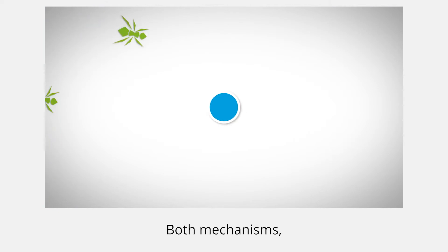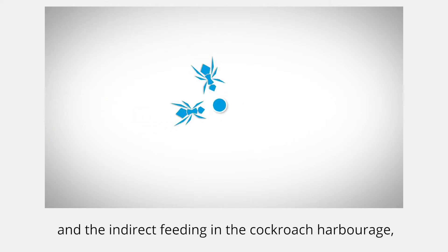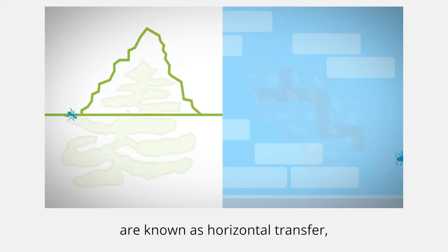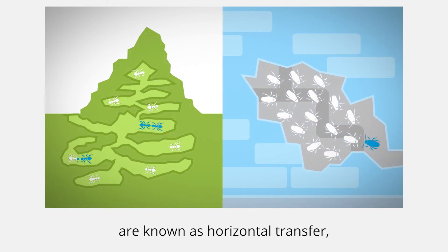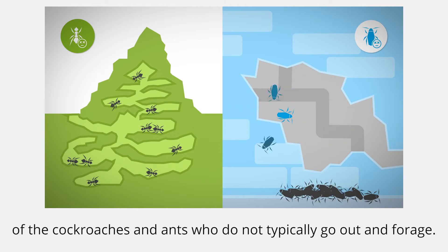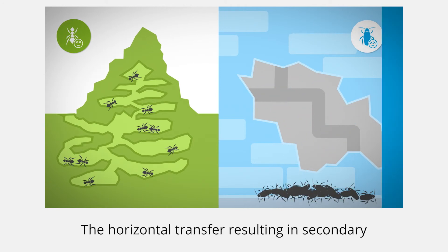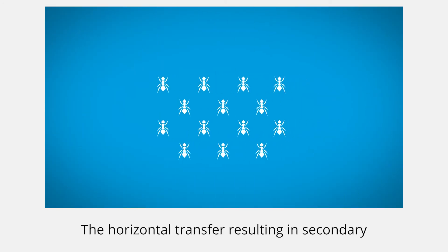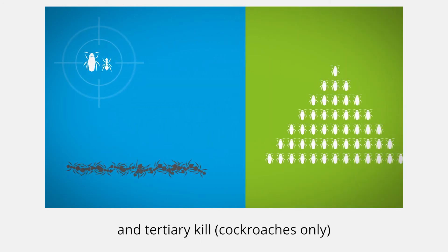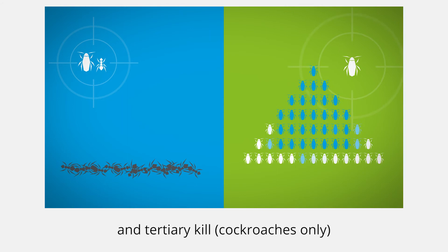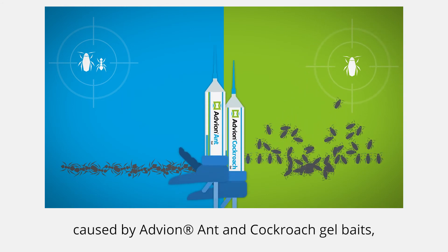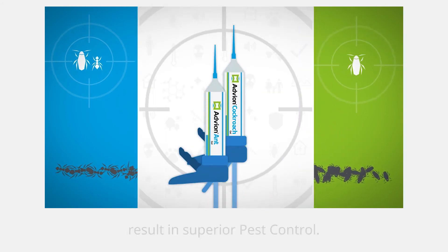Both mechanisms — the active feeding of the ants and the indirect feeding in the cockroach harbourage — are known as horizontal transfer, resulting in secondary kill of the cockroaches and ants who do not typically go out and forage. The horizontal transfer resulting in secondary and tertiary kill, caused by Advant ant and cockroach gel baits, results in superior pest control.